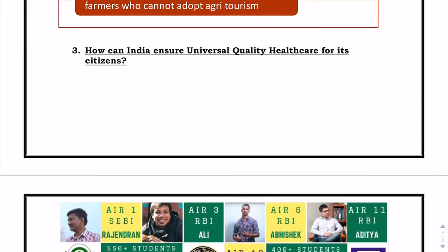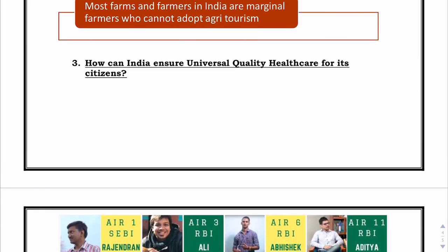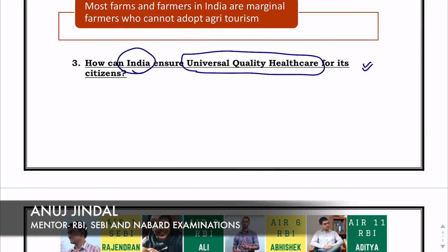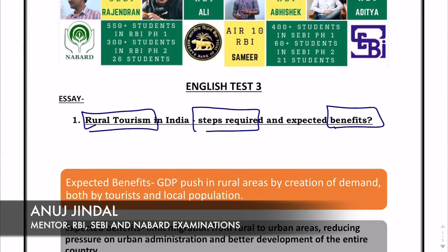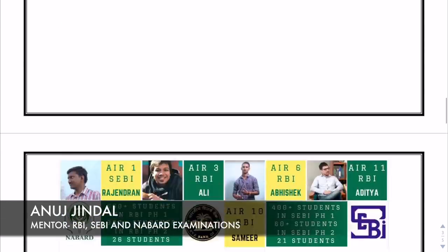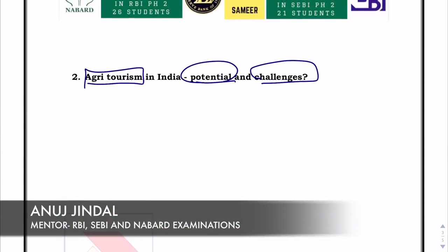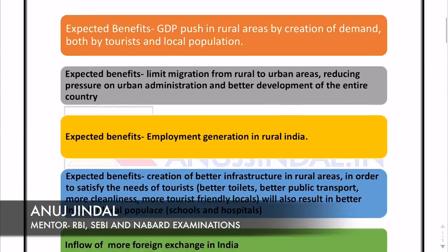The third topic was: How can India ensure universal quality health care for its citizens? That was the third topic and I think it was the most popular one — majority of students wrote on this one. The second most popular was the second topic. In fact, I think only one or two students wrote about Agri Tourism in India.